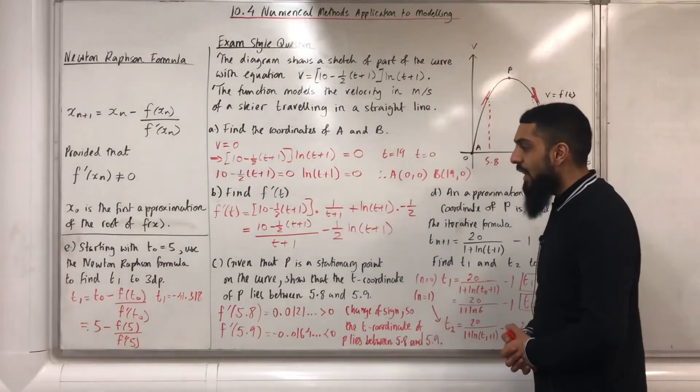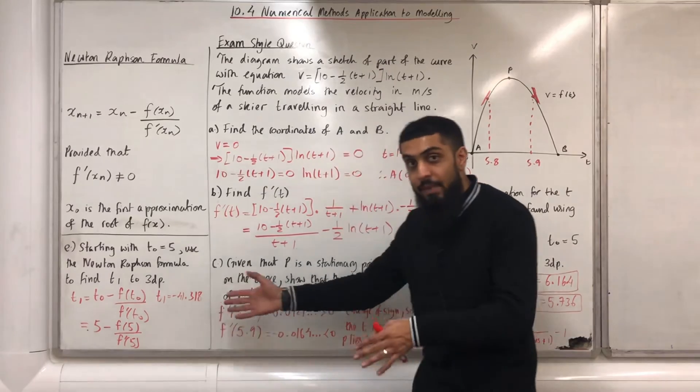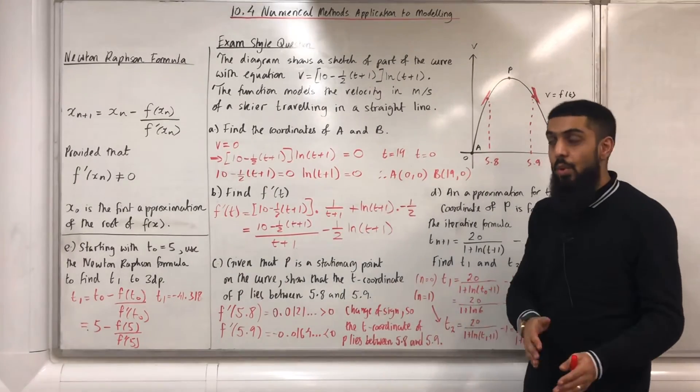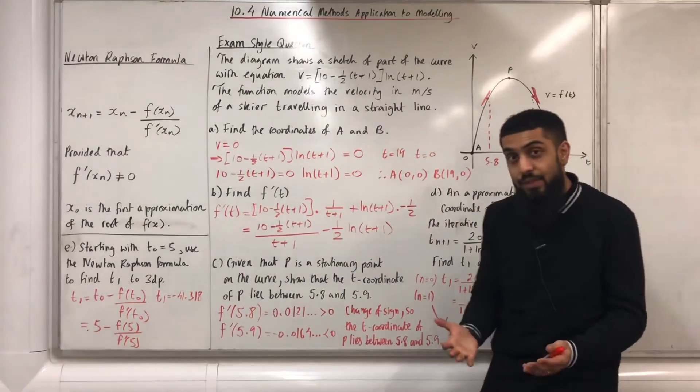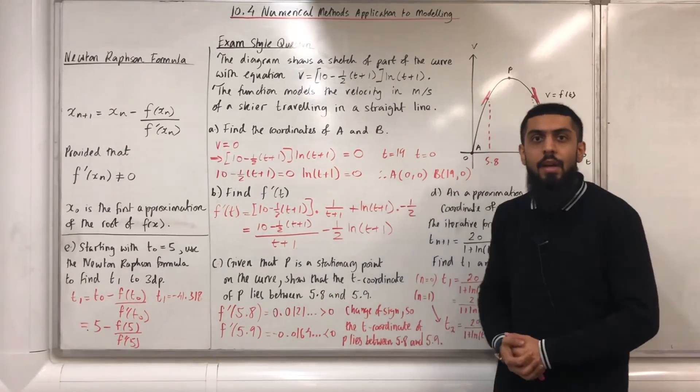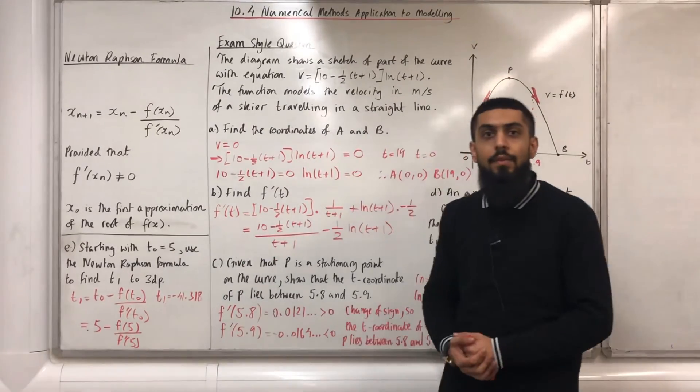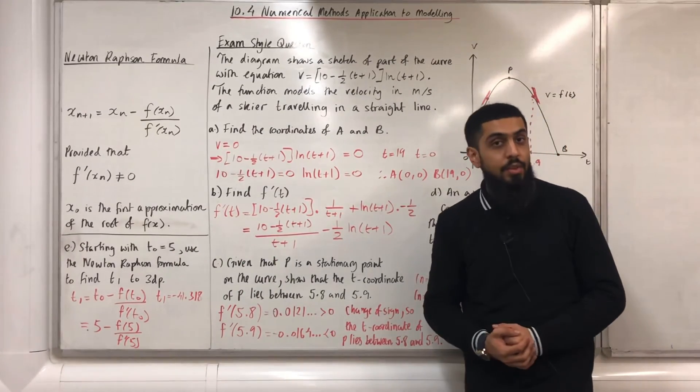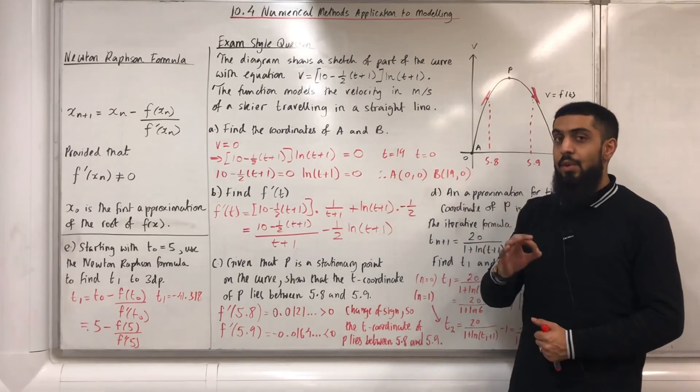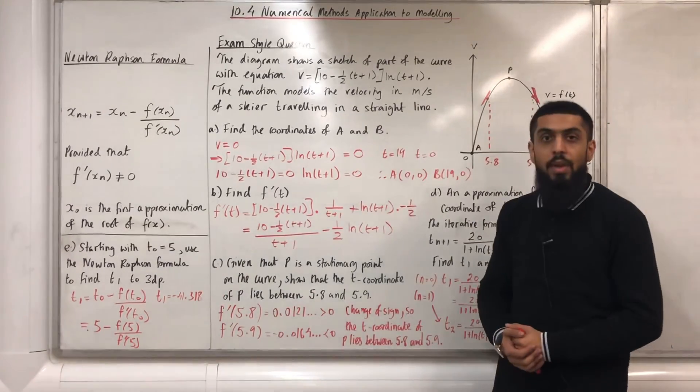After using my calculator, I get t_1 = -41.318. That particular approximation for the t-coordinate of P is not in the interval 5.8 to 5.9. So we can conclude that starting with t_0 = 5 and using the Newton-Raphson formula does not give us a good second approximation for the t-coordinate of P. In this case, -41.318.